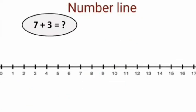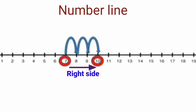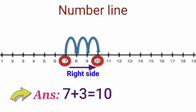Next, see the number line. 7 plus 3 is equal to — what is the answer? First we start at 7, jump to 3, move on the right side. 10. So the answer is, 7 plus 3 is equal to 10.